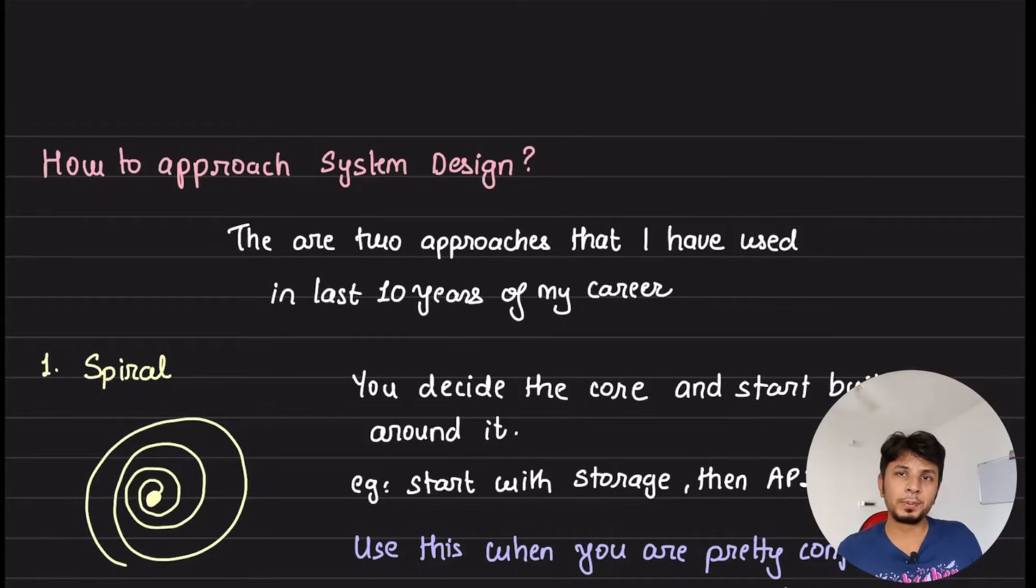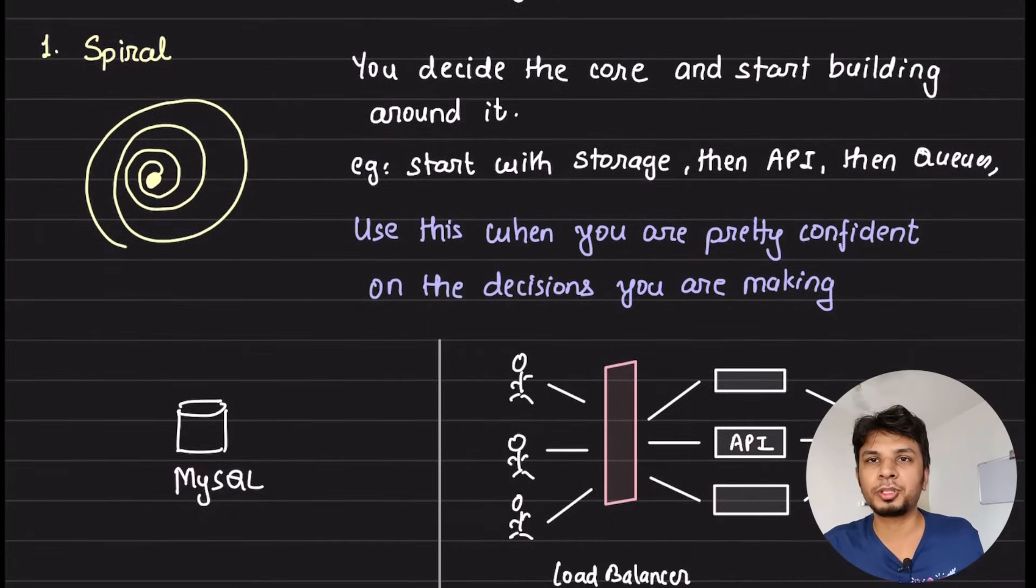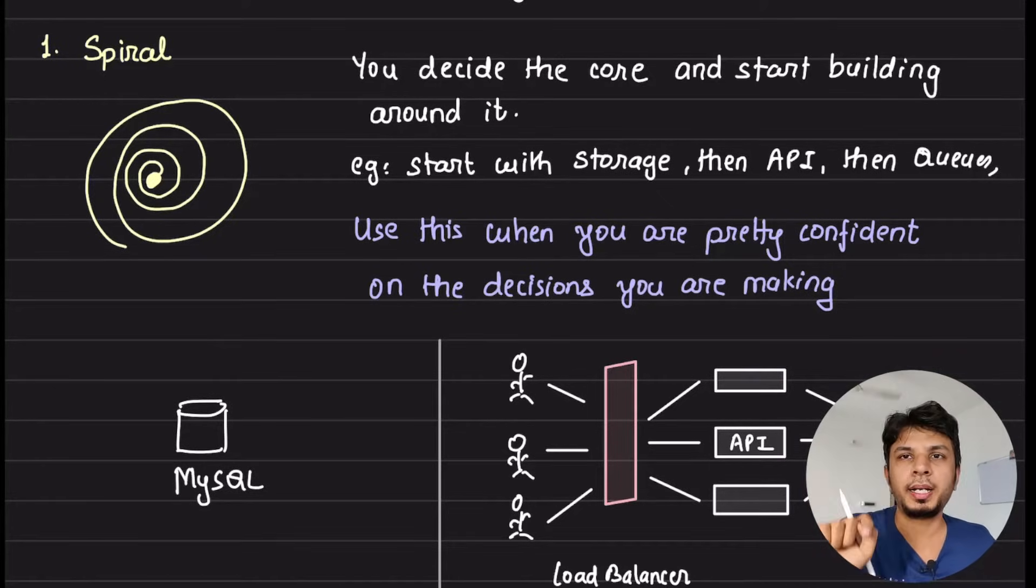Now talking about how to approach system design, the two approaches that I've used in my career: the first one is what I call a spiral approach. The spiral approach is where you decide the core of your system design and then you start building around it, so then your system evolves as a spiral.